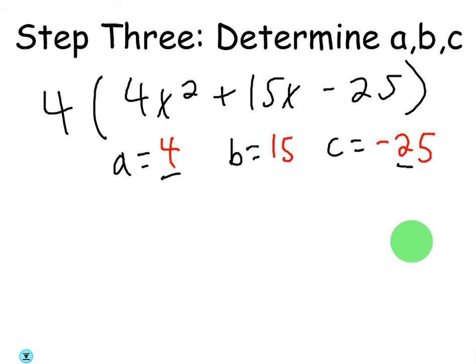Okay, so once you do pull the 4 out, you're going to have a new a, b, and c. Your new a, b, and c are going to depend on what's in those parentheses. So now the coefficient of x squared is your a, 4. Coefficient of x is b, which is 15. And then the number by itself is your c. So that's why we pull a GCF out, because these are going to be smaller now that we've pulled that 4 out.